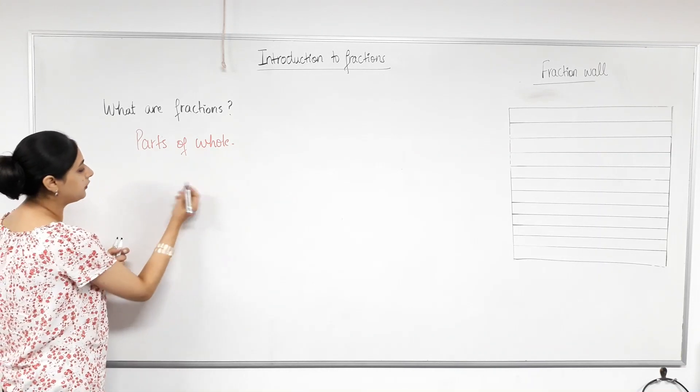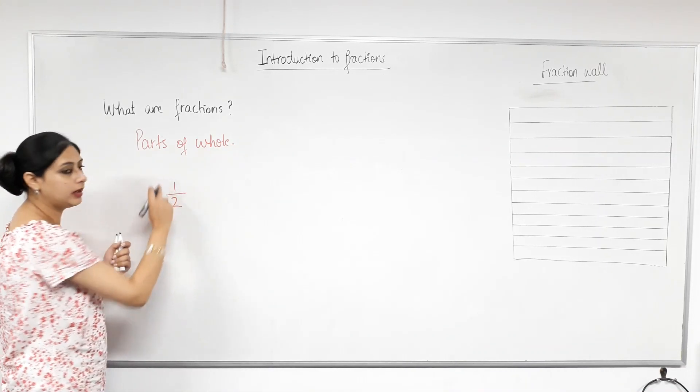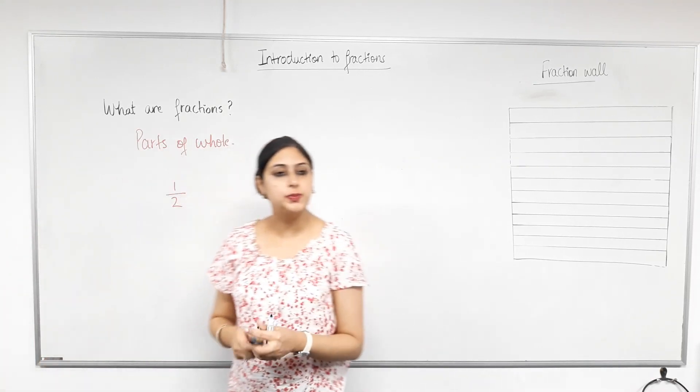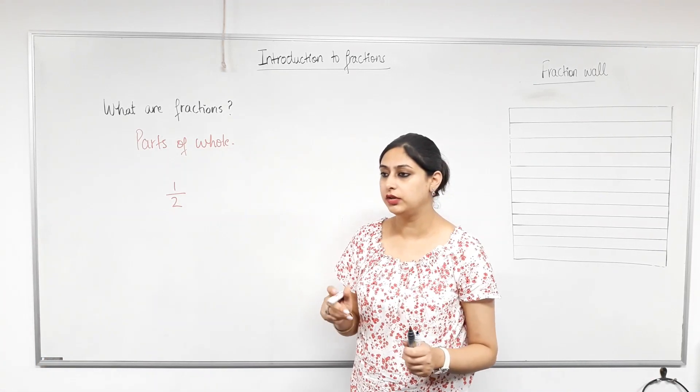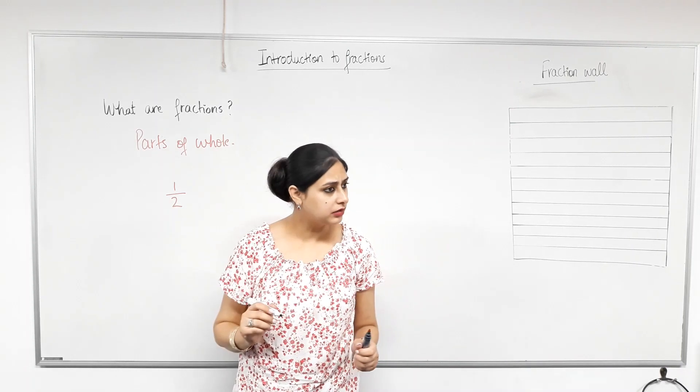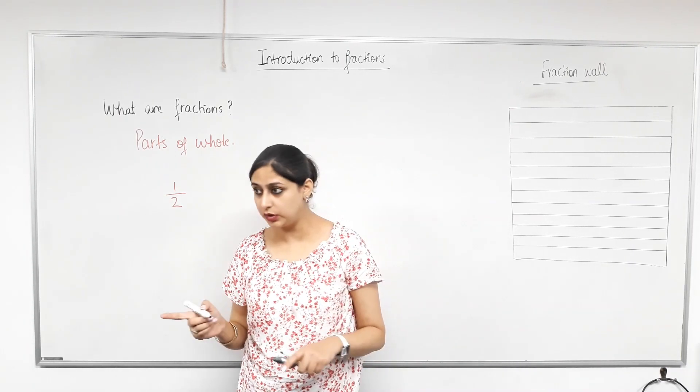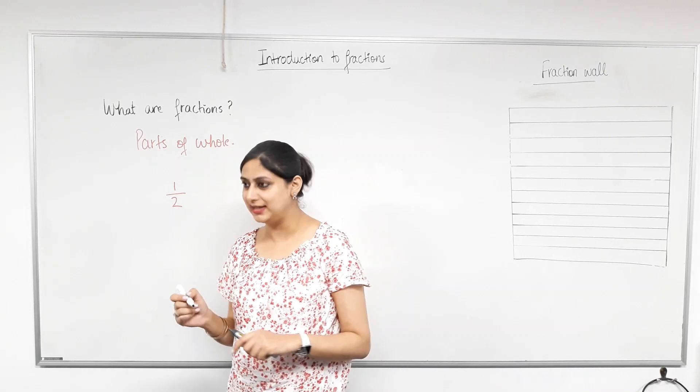So there are two parts of a fraction. Let's say I've written one number over the other number. There is a special name given to the top number. What's that called? Numerator. Is that correct? Yes. You sure? Yes. Is the top one called the numerator? Yes. Yes, it is correct.